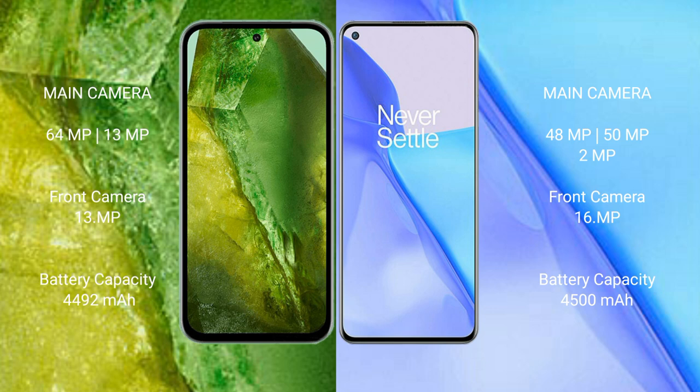Google Pixel 8a has a 4492-image battery with 30W fast-charging support. OnePlus 9 has a 4500D battery with 65MP fast-charging support.